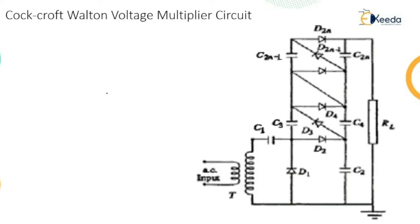This circuit is simple and compact when the load current requirement is less than one milliampere, such as for cathode ray tubes. So the application of this circuit is the cathode ray tube.